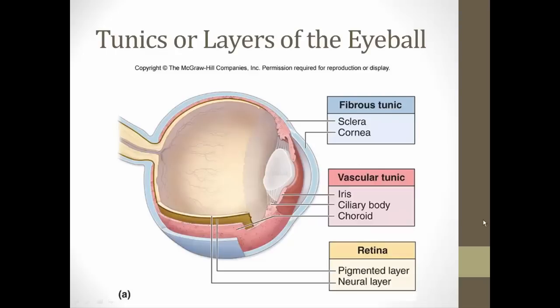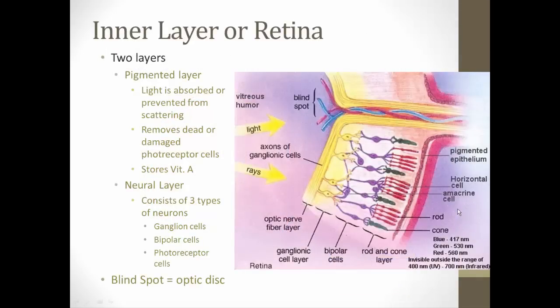The innermost layer is the retina, or neural tunic, composed of two layers: a pigmented layer and a neural layer. The pigmented layer is dark in color to absorb light rays and prevent scattering inside the eye. It is also responsible for removing dead or damaged photoreceptor cells — rods or cones — and storing vitamin A so photopigments can be made to convert light rays into neural potentials.